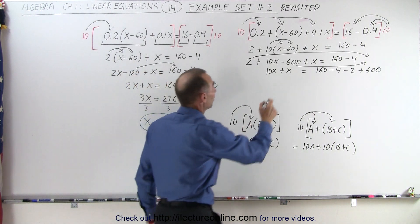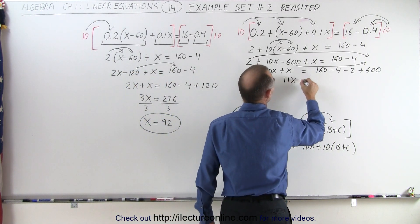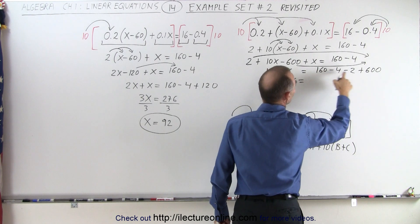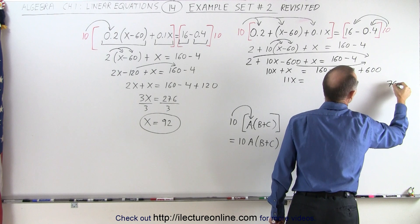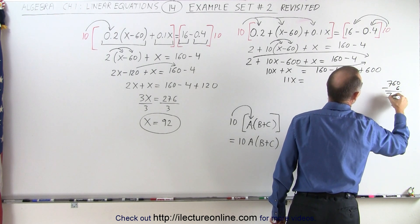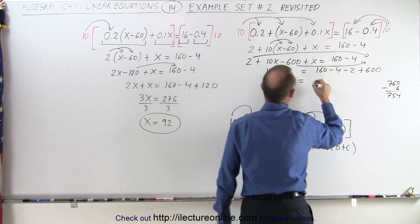Now we combine like terms. So here we have 11x is equal to 160 plus 600 is 760 minus 6 so that gives us 760 minus 6. That would be 754 on the right side.